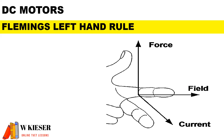For Fleming's left-hand rule for DC motors, the thumb points in the direction of force or motion, the index finger in the direction of the magnetic field, and the middle finger in the direction of current.